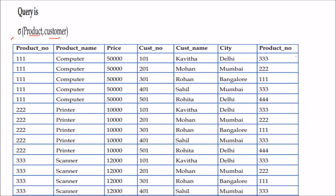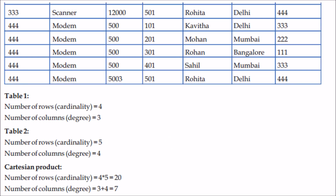The query for Cartesian product uses σ with two table names. The result has 20 rows and 7 columns. Cardinality of the first table was 4, cardinality of the second was 5, so the result has 4 × 5 = 20 rows. Degree of the first table was 3, degree of the second was 4, so the result has 3 + 4 = 7 columns.